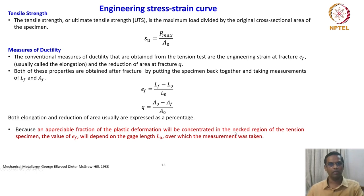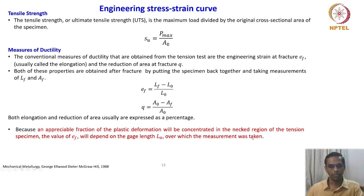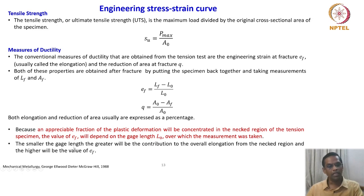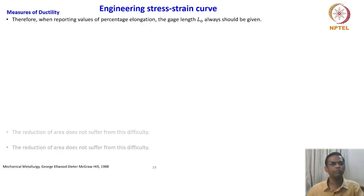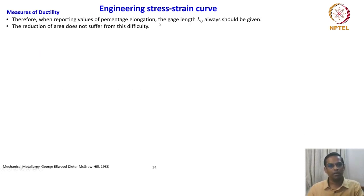Considering elongation as a ductility parameter is an issue because the plastic deformation will be concentrated in the neck region, so the elongation will depend on the gauge length L_naught over which it is measured. The smaller the gauge length, the greater will be the contribution to overall elongation from the neck region, and the higher will be the value of elongation. So there is a bias depending on the gauge length chosen. Therefore, when reporting values of percentage elongation, the gauge length L_naught must always be given.